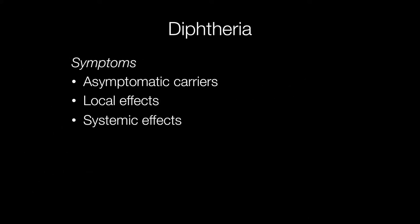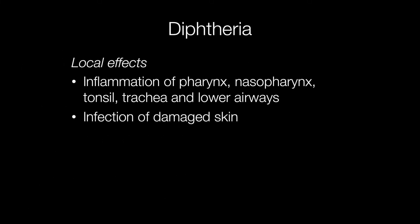Diphtheria infection can result in asymptomatic carriers, local effects, and/or systemic effects. Local effects are usually due to inflammation of the pharynx, nasopharynx, tonsils, trachea and lower airways; the esophagus can also be affected.